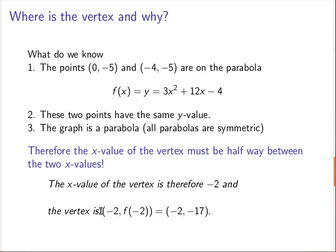So the vertex is in fact a negative 2, the function evaluated at a negative 2. Check that out and you get a negative 2, minus 17.